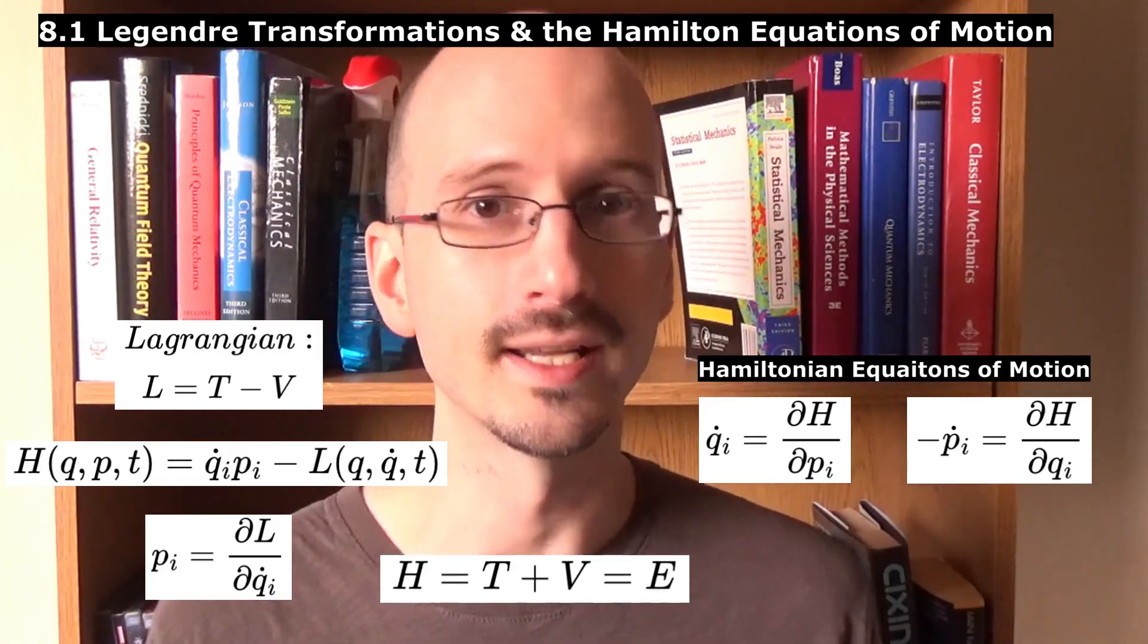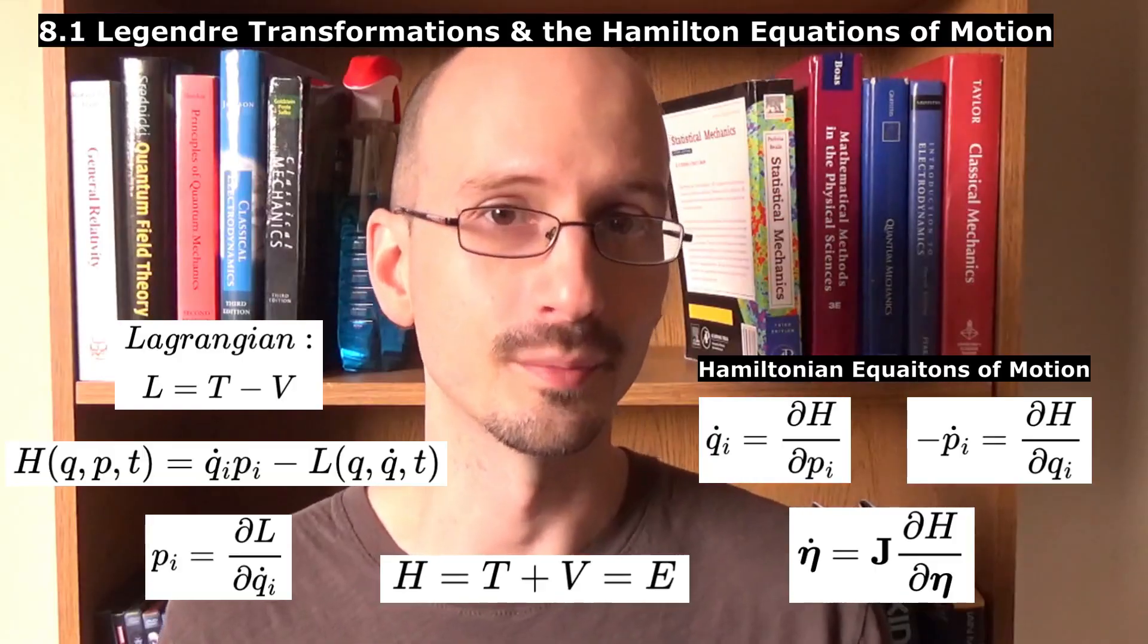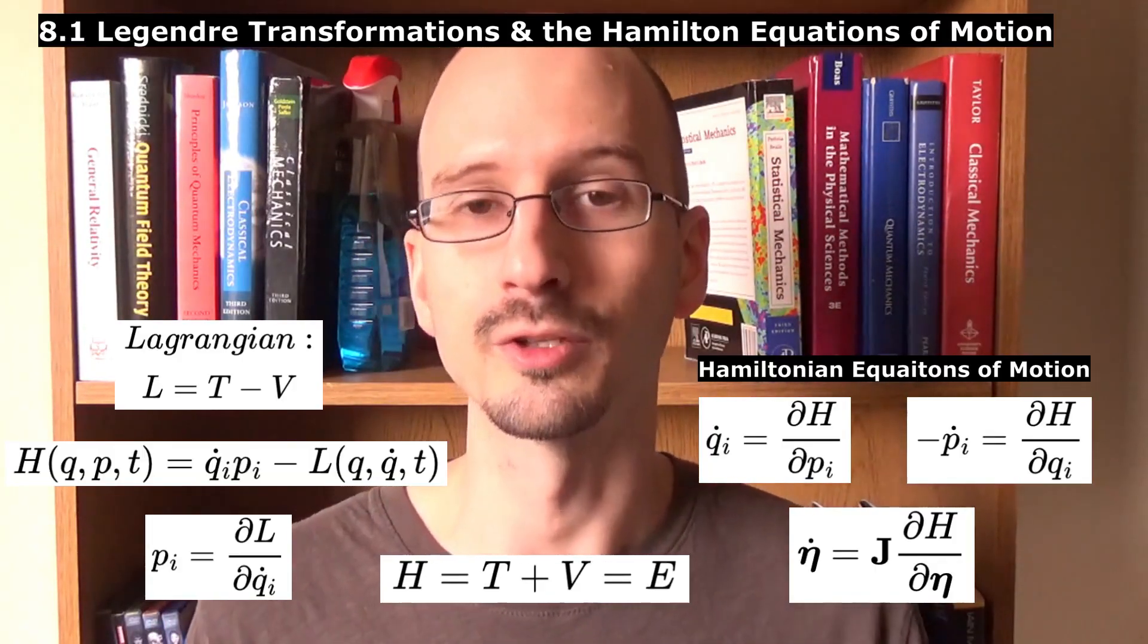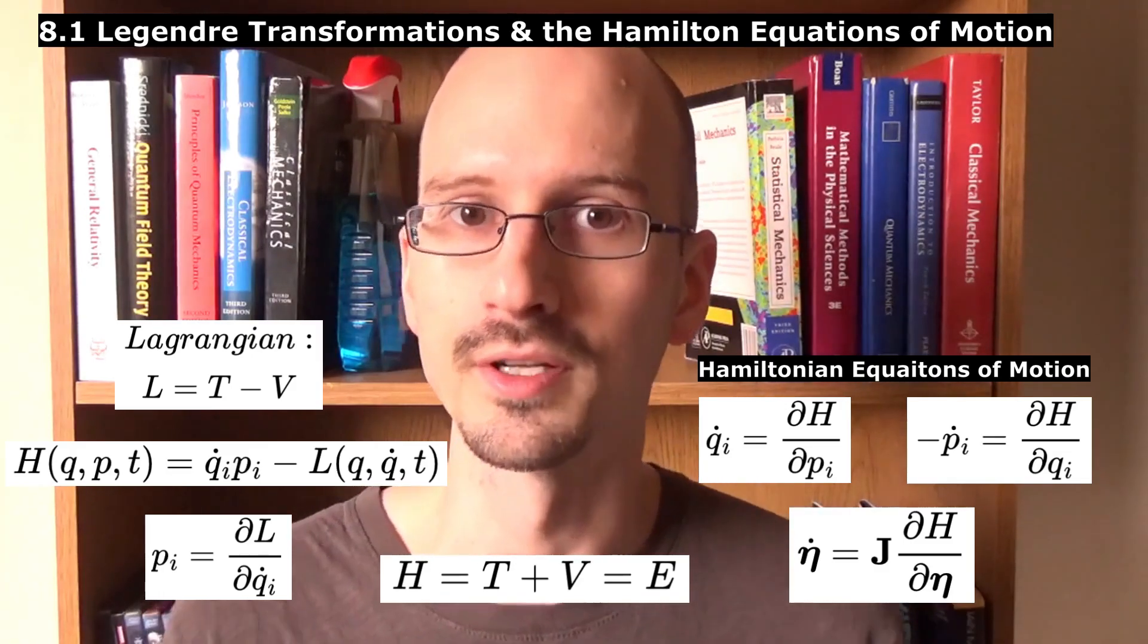In fact, they can all be written together in matrix notation or symplectic notation like this, where that j is a particular matrix that picks out coordinates and momenta.